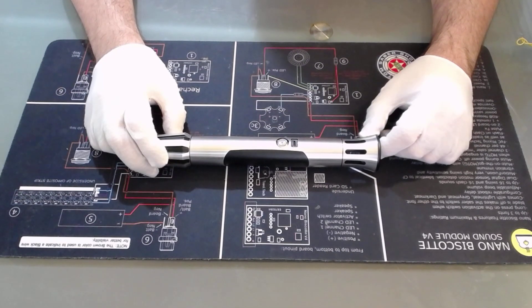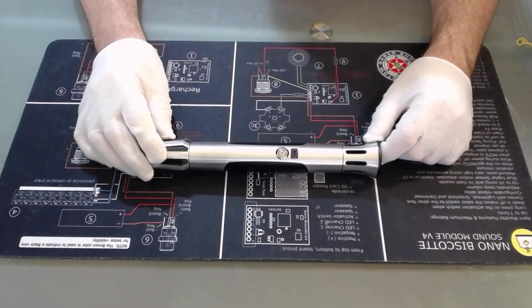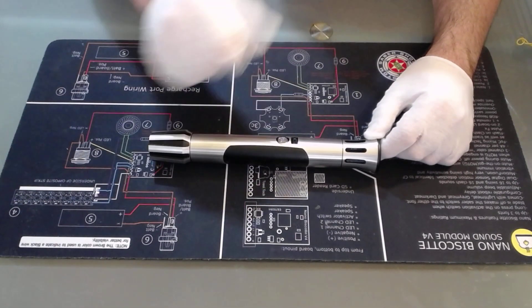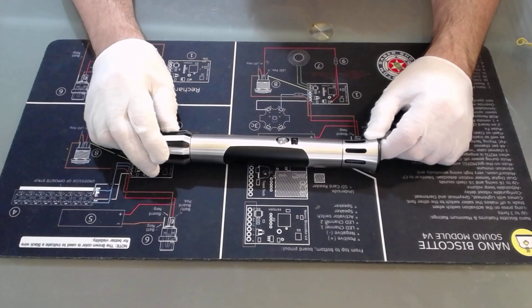So weighted pommel and the flared emitter is what we immediately identified as being quite attractive to the one-handed practitioners. Right, so let's look at the rest. We've got the recharge port and switch assembly here. We have this really nice switch design, illuminated by a white LED backlight when the saber's running.